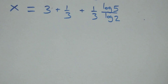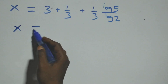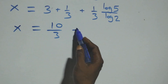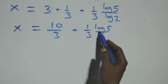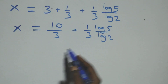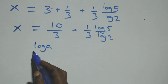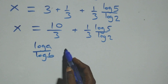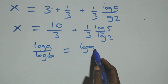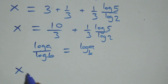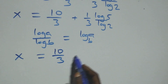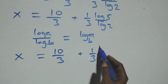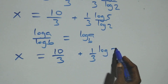We can express 3 plus 1 over 3 as 10 over 3. So x equals 10 over 3 plus 1 over 3 times log 5 over log 2. Applying the change of base formula — log a over log b equals log a to base b — we have x equals 10 over 3 plus 1 over 3 times log 5 base 2.